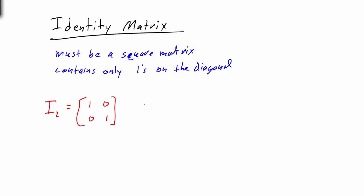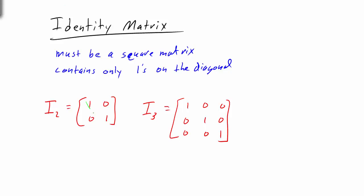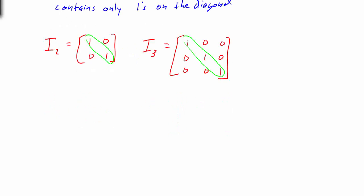The identity matrix for a 3 by 3, I sub 3, would be 1, 0, 0 in the first row; 0, 1, 0 in the second row; and 0, 0, 1 in the third row. Notice that on the main diagonal we have ones, and then everything else is a zero.